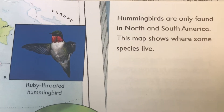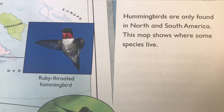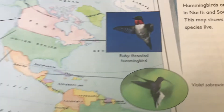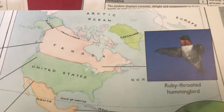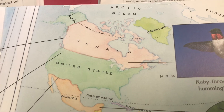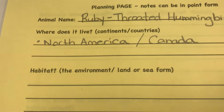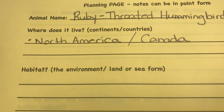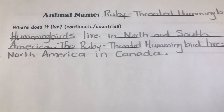What I found was that hummingbirds are only found in North and South America. This map shows where some species live. I found my ruby-throated hummingbird, and there's an arrow showing it's in North America, specifically in Canada. So my point form notes just say North America slash Canada.